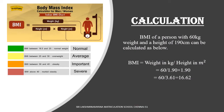We have a formula to calculate the body mass index: BMI equals weight divided by height squared, where weight is in kilograms and height is in meters. BMI between 18.5 and 25 is normal weight; between 25 and 30 is average weight; between 30 and 40 is obesity; and above 40 is severe obesity.